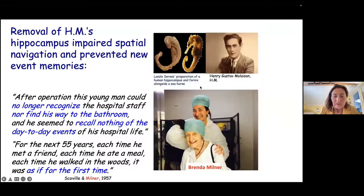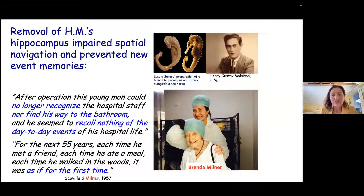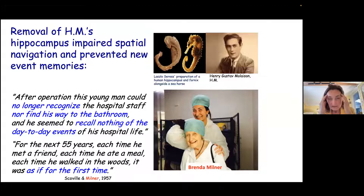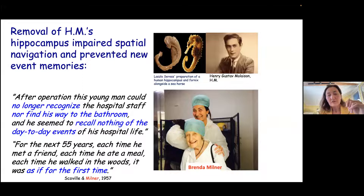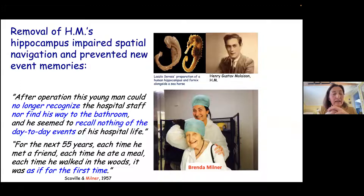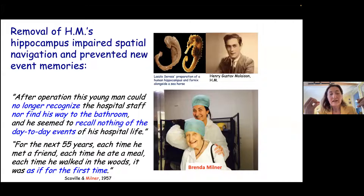If this structure is lesioned, like it happened with H.M., who had an accident and developed seizures in his adulthood, then he had to have his temporal lobes removed — just inside here near our ears — including the hippocampus. In the paper written by neuropsychologist Brenda Milner and surgeon William Scoville, they noted that after the operation this young man could no longer recognize hospital staff, nor find his way to the bathroom.